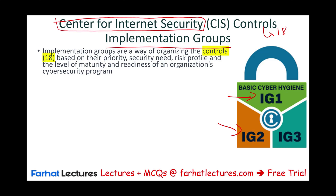So in this session, we define what is IG1, what is IG2, and what is IG3. How do we organize this? It's based on the priority, the security need of the organization, the risk profile of the organization, the level of maturity, the readiness of the organization, and the cybersecurity program.